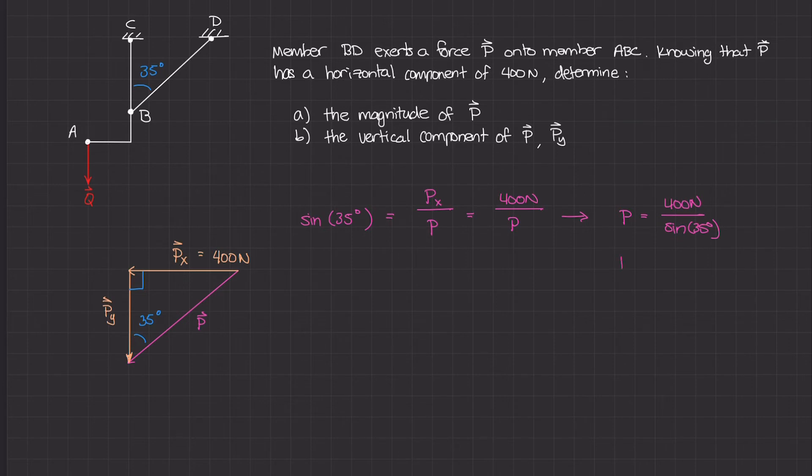It's as simple as plugging this into our calculator. Our magnitude for P is about 697.4 newtons. That solves the first part of the question, part A.